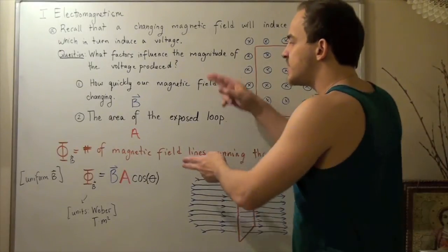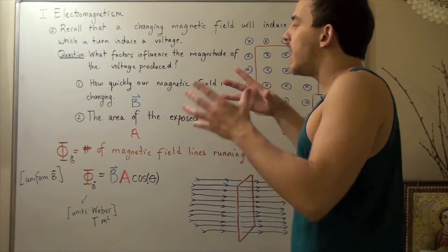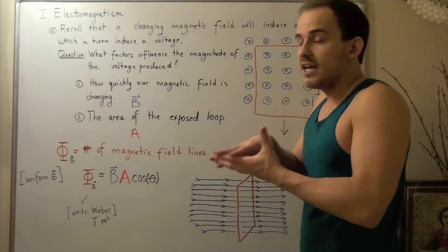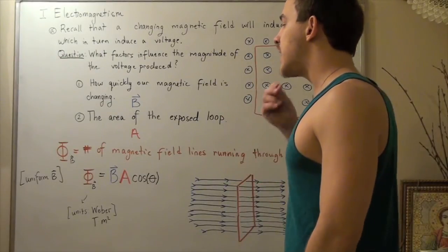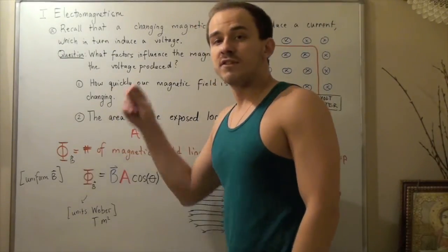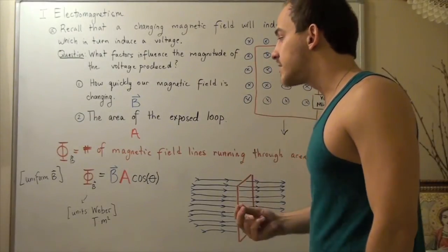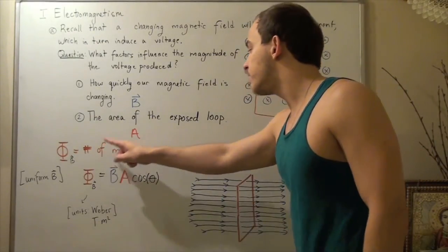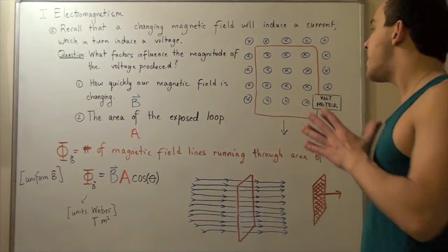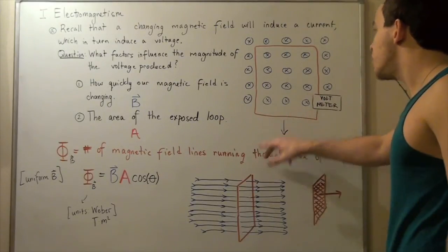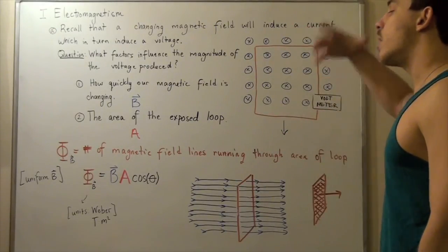In order to explain these two factors, in order to combine these two factors into one equation, he came up with the idea of magnetic flux. Now, magnetic flux is simply the number of magnetic field lines that are passing or running through the area of this loop or some other loop.